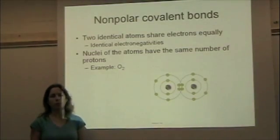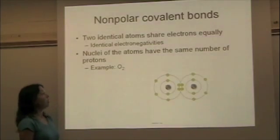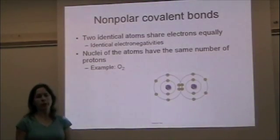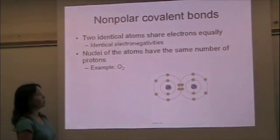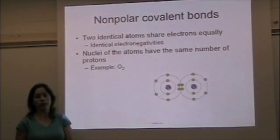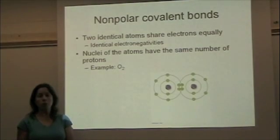We can divide covalent bonds into two different groups. The first group is called non-polar covalent bonds. These form when two atoms that are identical come together to make a covalent bond. The electrons are shared equally because the two atoms have identical electronegativities. Another way to think about it is that they have the same number of protons in the nuclei.